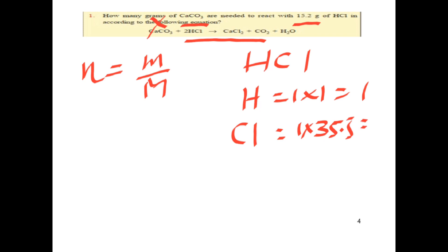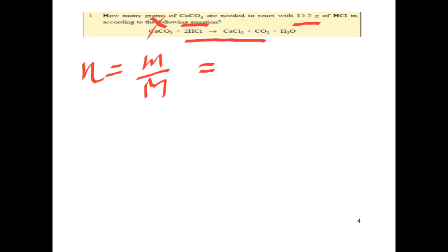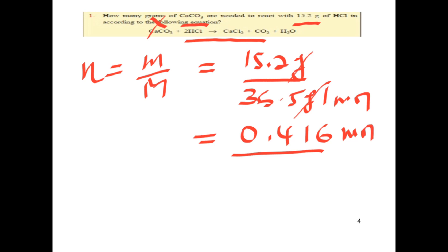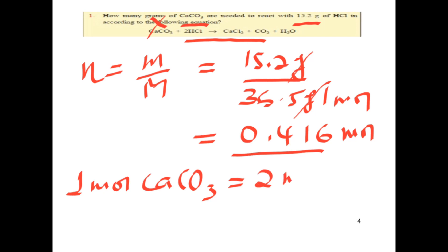1 mole of HCl has a molar mass of 35.5 + 1 = 36.5 g/mol. Calcium carbonate, the mineral, reacts with hydrochloric acid. It reacts with 2 moles of HCl.